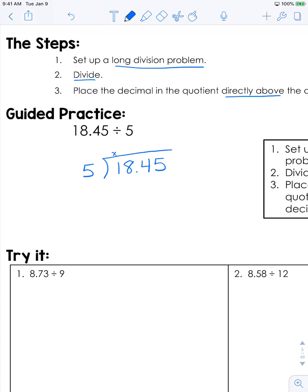5 cannot go into 1, but it goes into 18 three times. We will subtract and bring down. 5 goes into 34 six times. Subtract and bring down. Then 5 goes into 45 nine times.